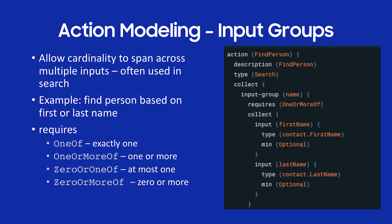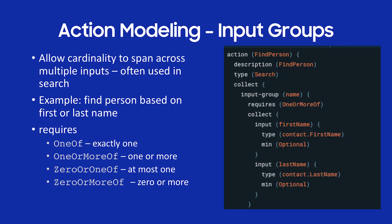Let me talk about action modeling and input groups. This is a way to take that concept of cardinality and spread it across multiple concepts you're collecting in your action. In my example find person, I have this input group called 'name' with 'requires one or more of,' and I'm collecting first name and last name. What 'one or more of' tells Bixby is: it's valid to input first name only, last name only, or first and last name. The options are: one of, one or more of, zero or one, and zero or more.